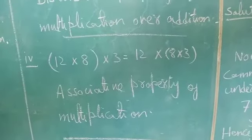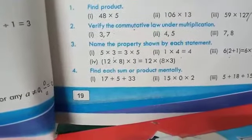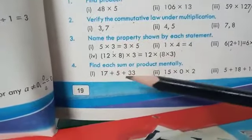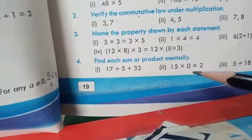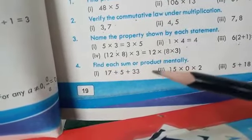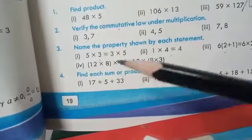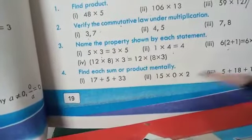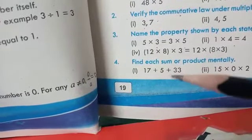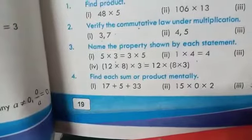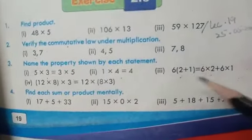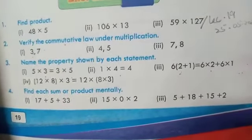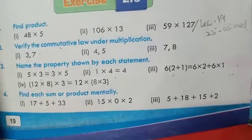Next question — look at page number 19. Question number 4 is: find each sum or product mentally. Here we have sum, which means addition, and product, which means multiplication. The parts are: 17 plus 5 plus 33 — this is addition; 15 into 0 into 2 — this is multiplication; and 5 plus 18 plus 15 plus 2 — this is also addition.